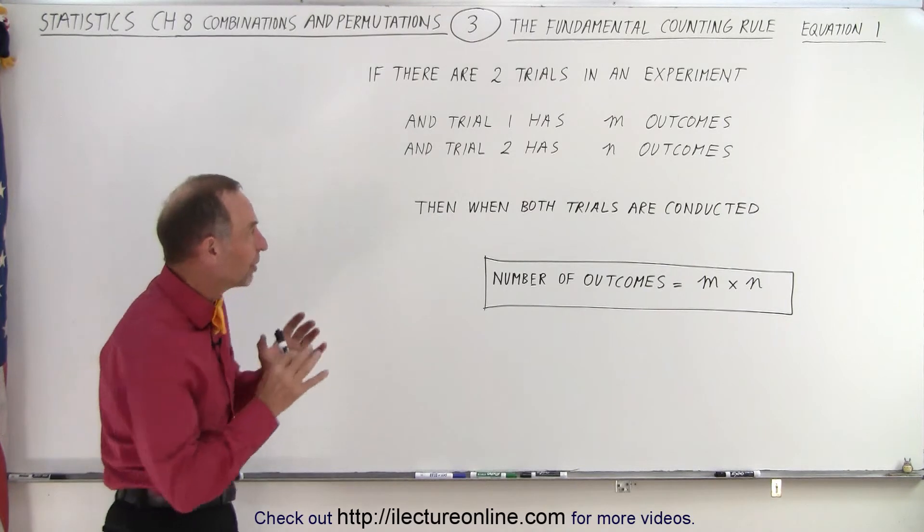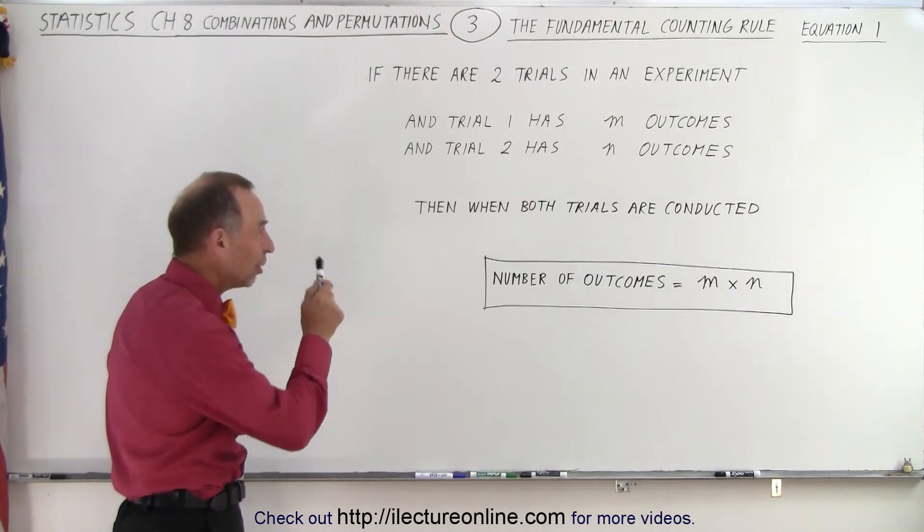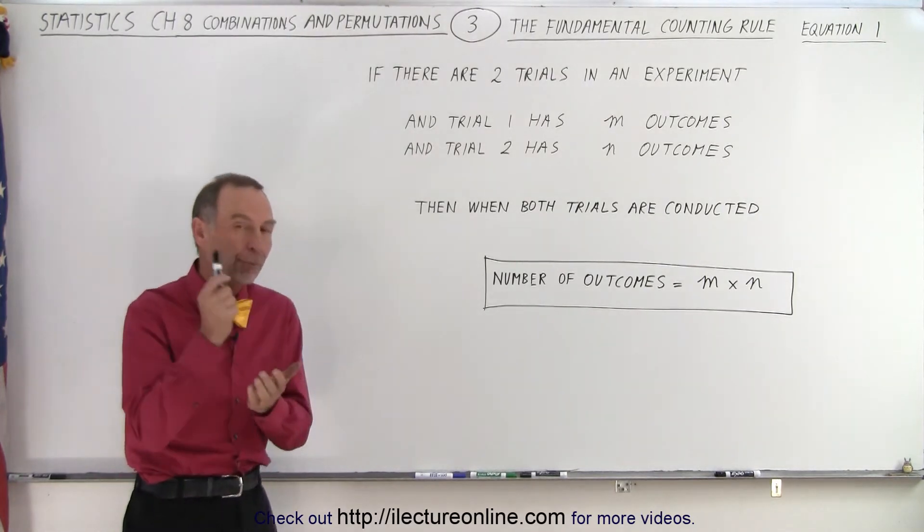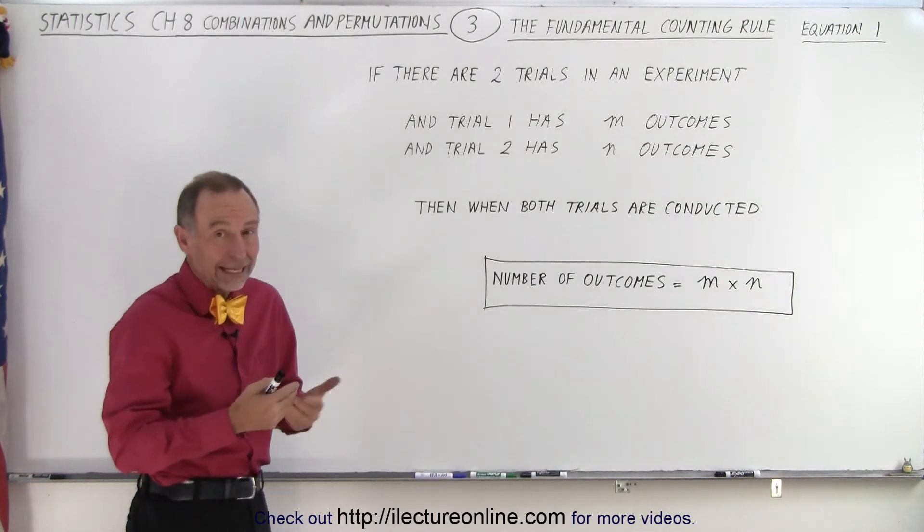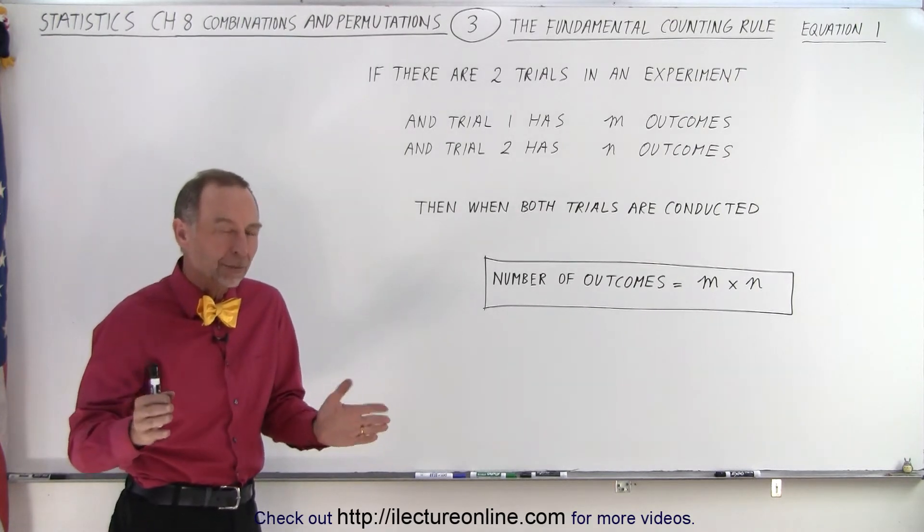and both of these trials are conducted, then the number of outcomes is simply the product of m times n. So, if m is 10 and n is 20, then there's a total of 200 outcomes.